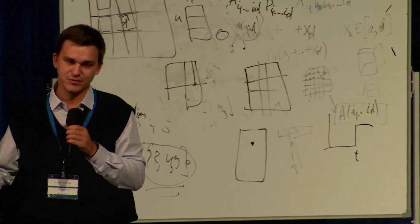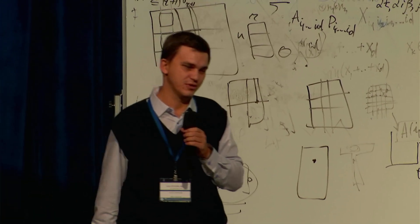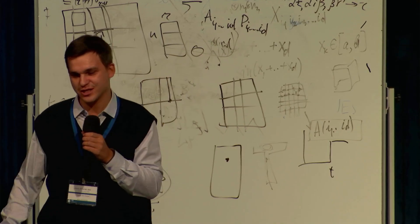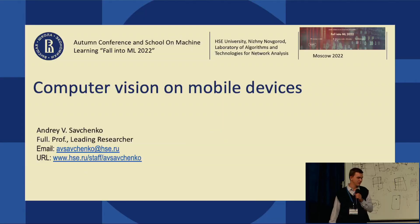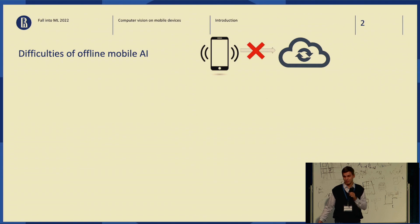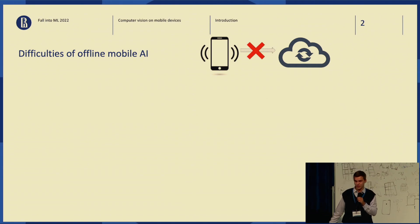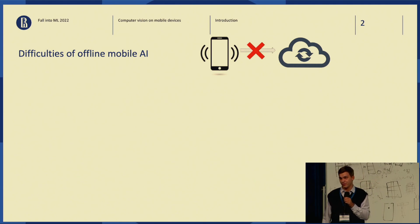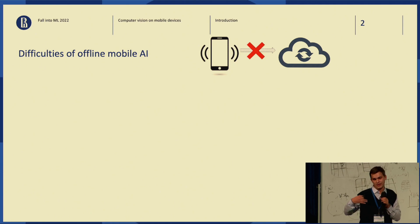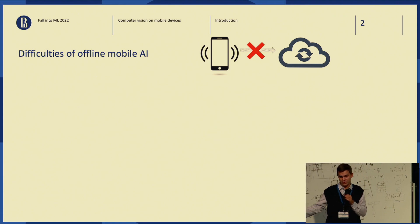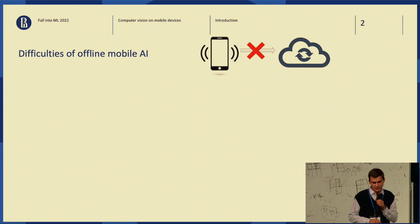I will share my presentation. Actually, I will speak mostly about offline mobile computer vision, because it's possible to send images to a remote server and process them as we used to do, but right now we are focusing on offline processing — when you process images directly on your device. We don't speak here about cloud computing.